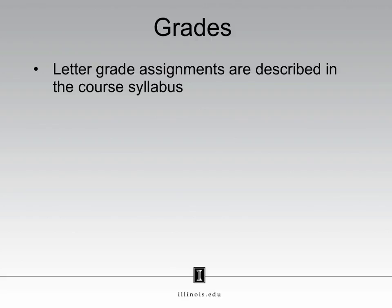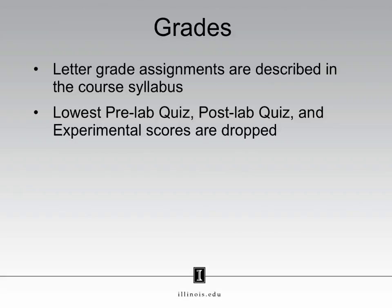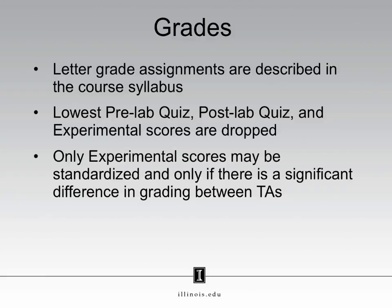We have just finished discussing all the pieces that make up your grade: the getting started quiz, your pre-lab quizzes, your post-lab quizzes, your lab notebooks, the two exams, and your lab practical. Your letter grades will be assigned as described in the course syllabus. The lowest pre-lab quiz, the lowest post-lab quiz, and the lowest experimental scores will be dropped at the end of the course, and these do not all have to be from the same experiment. There will not be a curve for most components; for experimental scores only, there may be a standardization if there is a significant difference in grading between TAs.